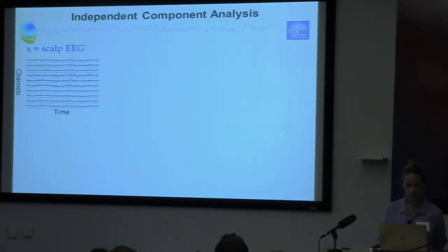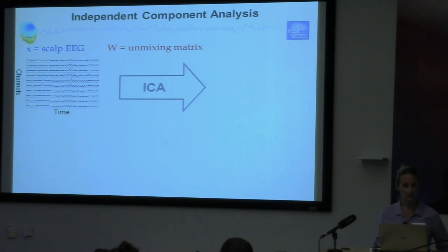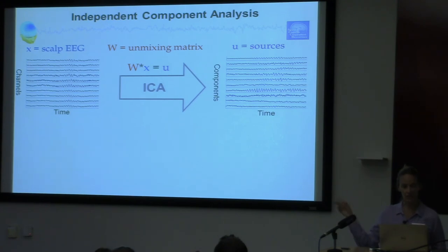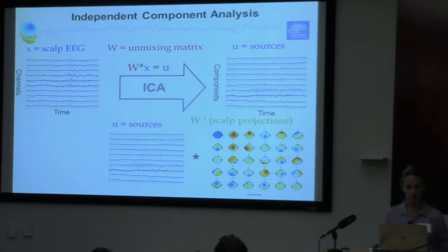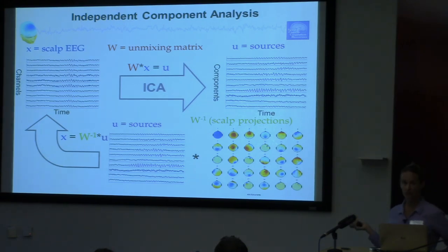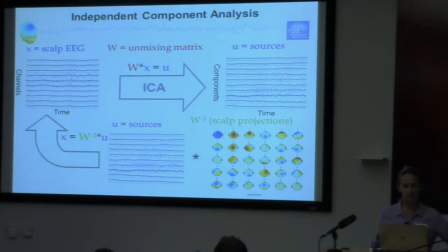Independent component analysis — you've likely gotten the details this morning, but just to review: when you start out with channels over time, that's what we call X, the scalp EEG. ICA is a process of finding a matrix W such that W times X equals U, the component activations. Component activations have the same X and Y values as channels, except it's components over time rather than channels over time. This is a linear operation — if you multiply the inverse weight matrix by U, you get back the original data. The inverse weight matrix is W inverted, and that gives you the scalp projections, which helps you know where the signal is coming from in the head. Later you'll learn how to fit an equivalent dipole to these scalp maps.